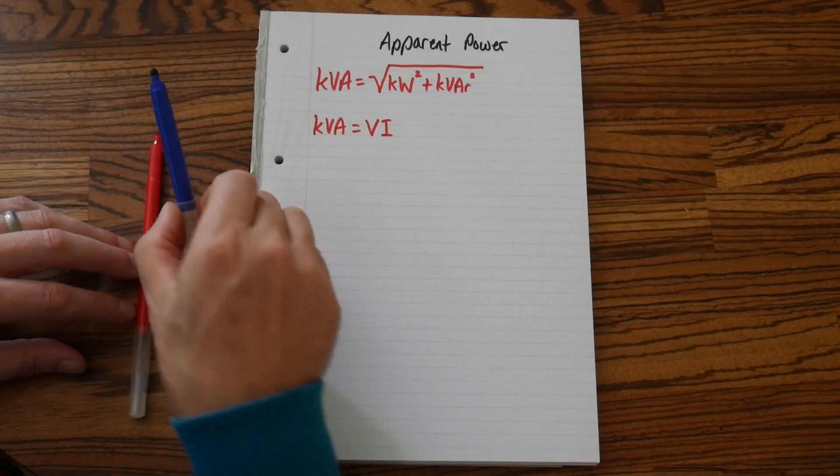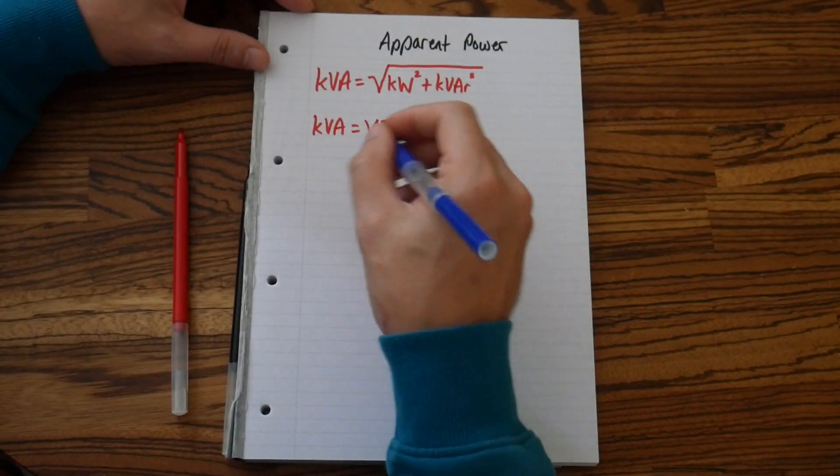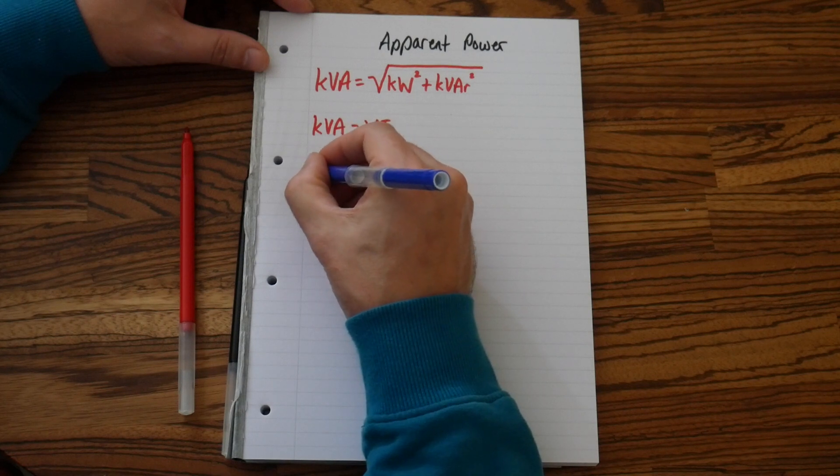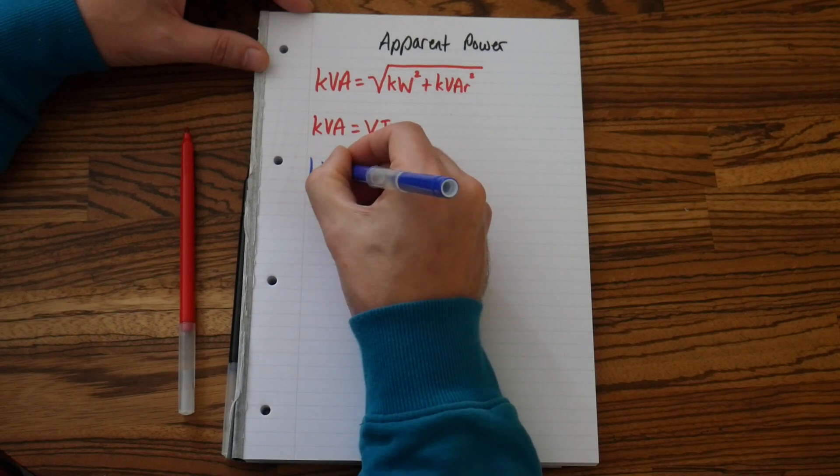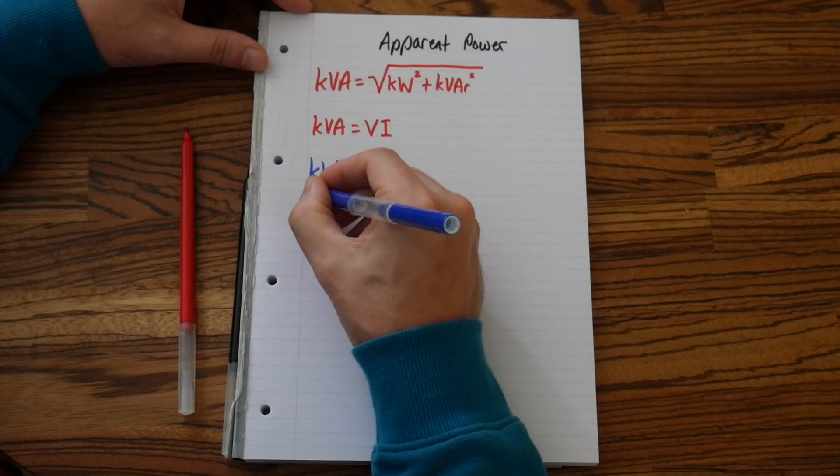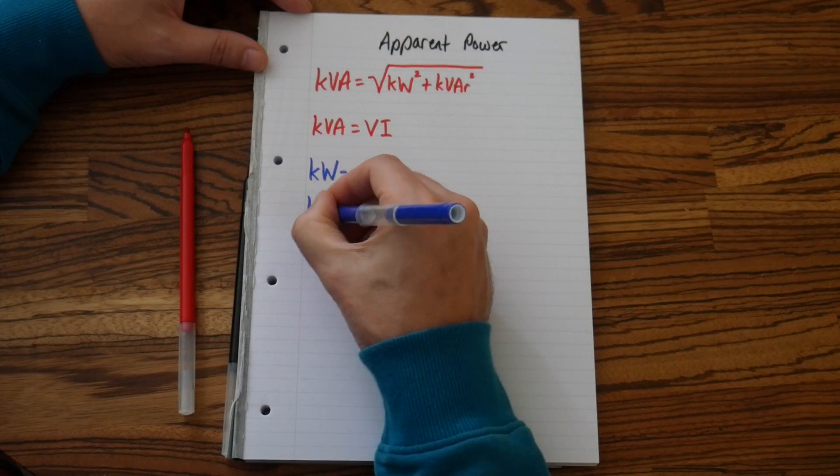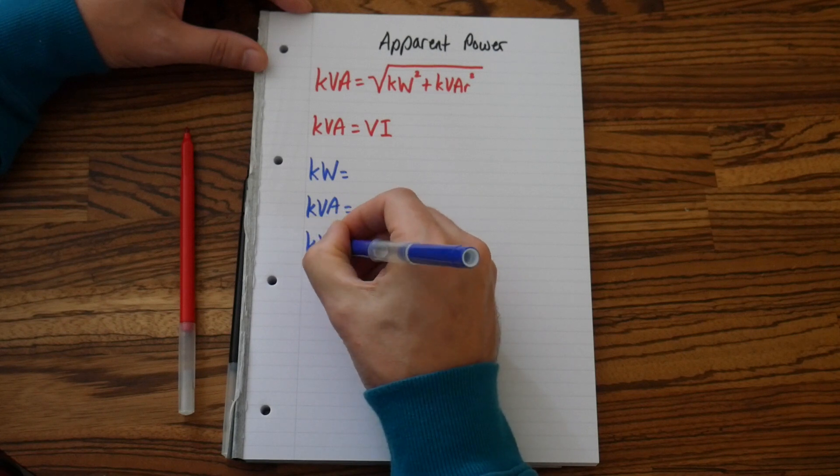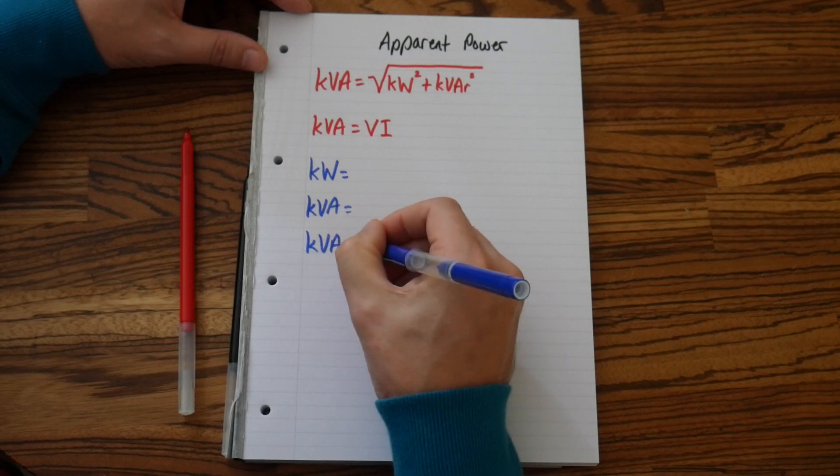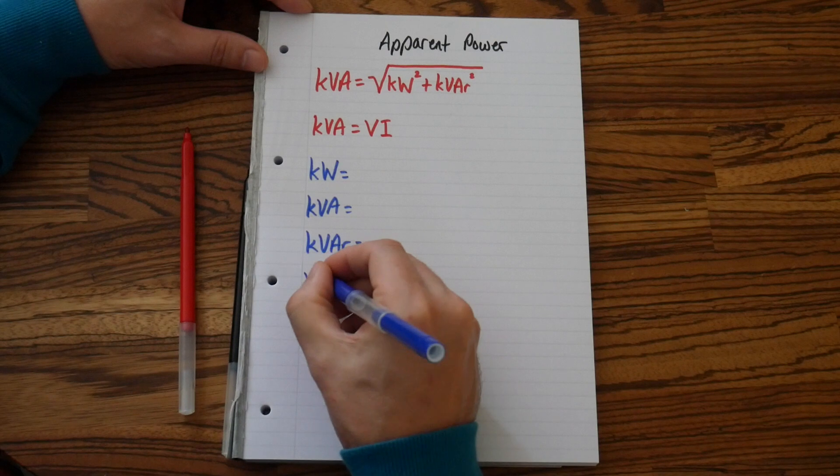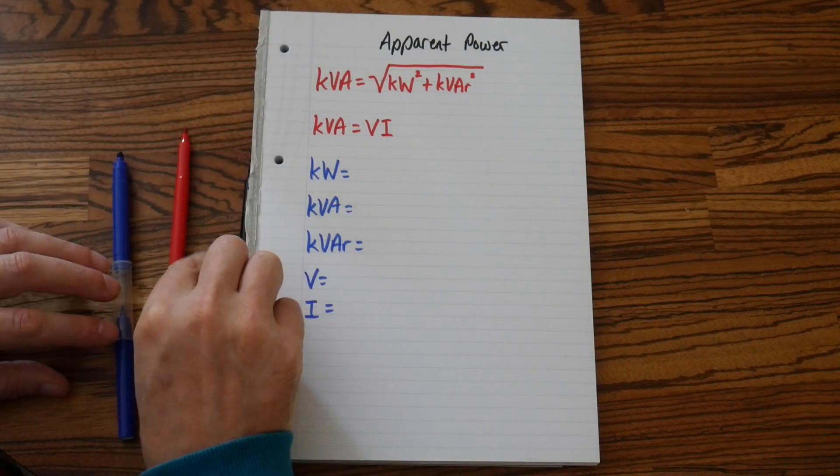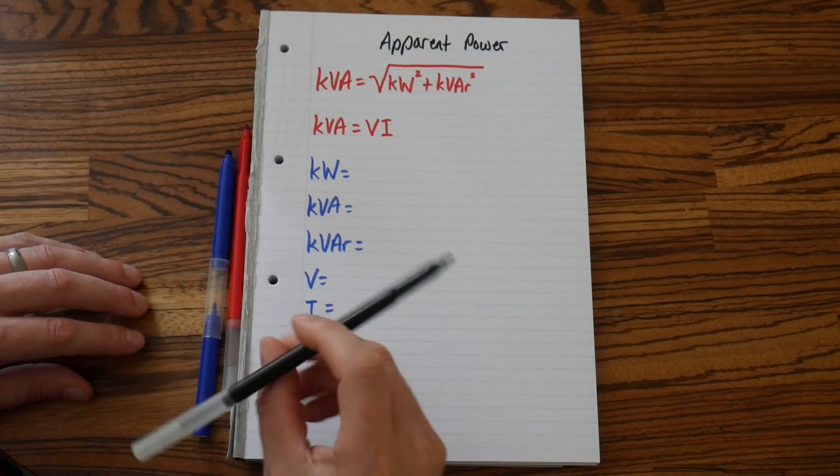Right, let's switch pens. Let's write down what these symbols mean. So we've got kW equals, kVA equals, kVAR equals, V equals, and current equals, or I is what I say, equals.